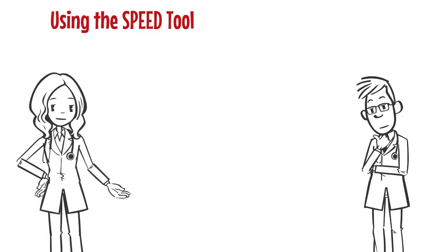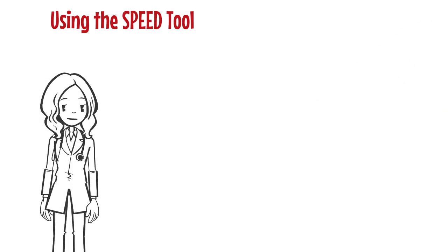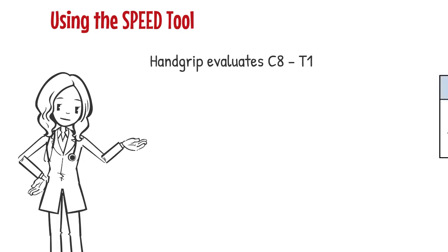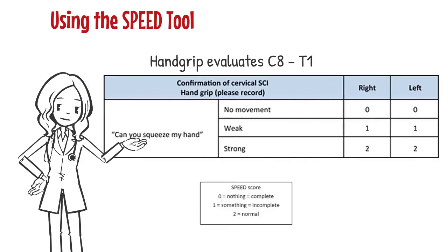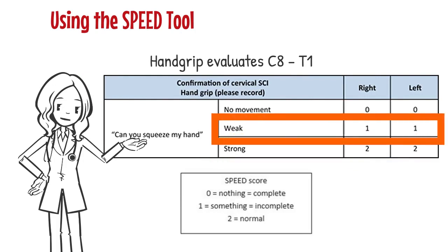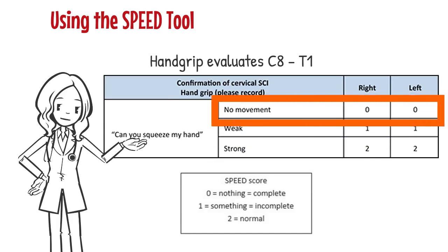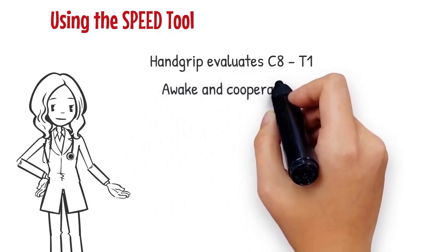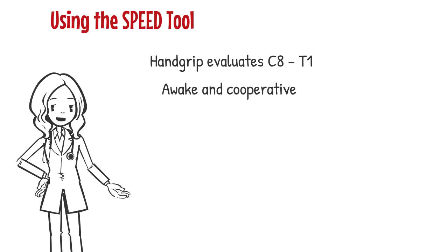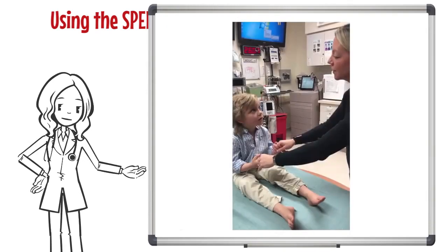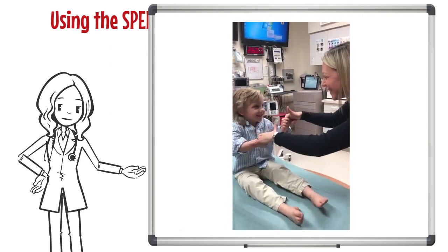Yes. The next component of SPEED is assessing hand grip strength. Hand grip strength assesses function at the C8-T1 level. The patient is asked to squeeze your hand. A strong hand grip is scored as 2, a weak hand grip is scored as 1, and an inability of the patient to grip is scored as 0. Remember the patient has to be awake and cooperative for SPEED to be performed. The obtunded patient may grip as a reflex. Let's watch a short video that shows this part of SPEED being performed. Can you squeeze my hands? Good.